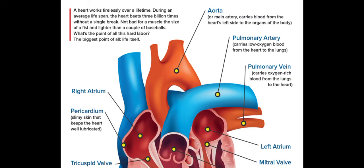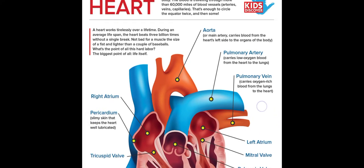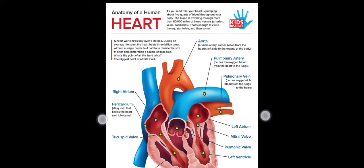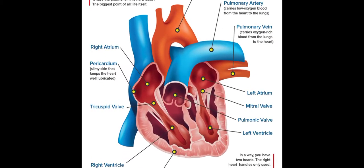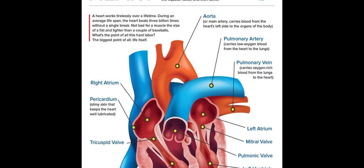So as we know, we have the four chambers: the left ventricle, the right ventricle, the right atrium, and the left atrium. Now let's look at the function of some of these arteries. The aorta, or main artery, carries blood from the left side of the heart to the organs of the body.